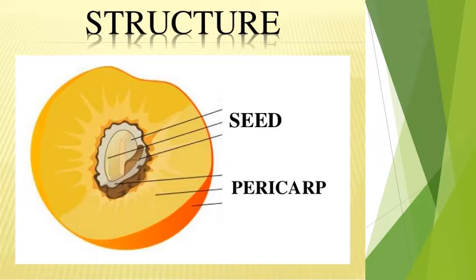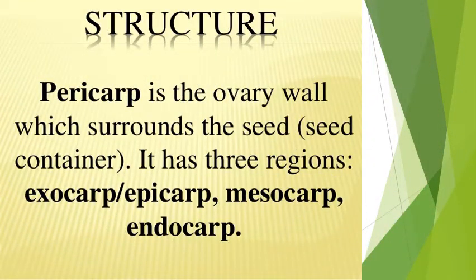The pericarp is the part we usually eat or peel off, and the seed is inside in the middle. The pericarp or fruit wall surrounds the seed and has three main regions or layers: exocarp (also called epicarp), mesocarp, and endocarp.